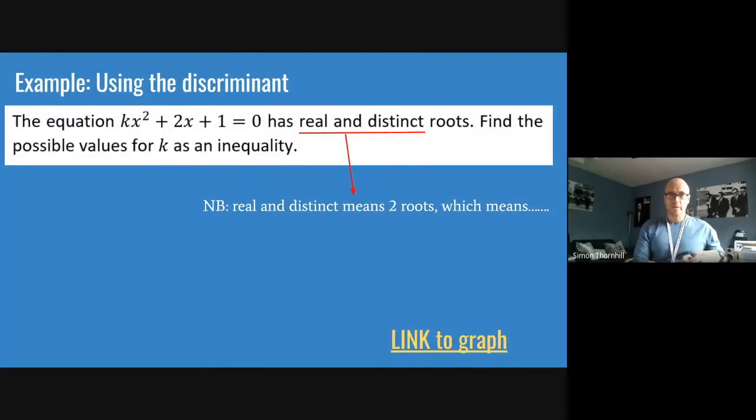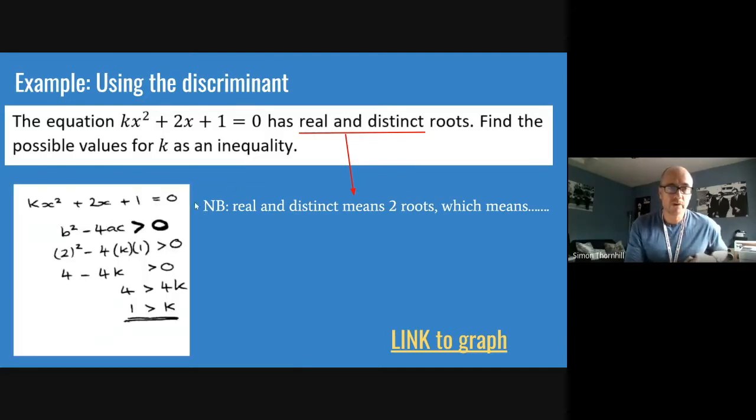All right, so this is where it starts to get a little bit more interesting. You've got a quadratic equation with an unknown coefficient for the x squared terms. You've got kx² + 2x + 1. We're told that the quadratic has real and distinct roots. Now, if you recall back, you can rewind if you want, but if you recall back on an earlier slide, real and distinct means two roots and therefore a positive discriminant. b² - 4ac will be greater than zero. And the question asks, find the possible values of k as an inequality.